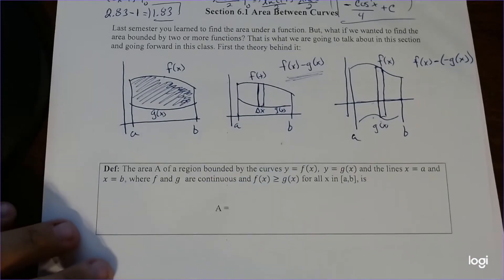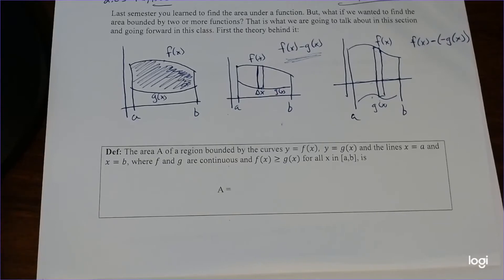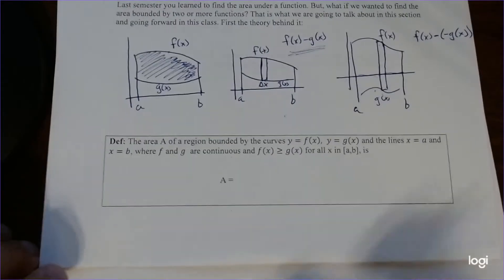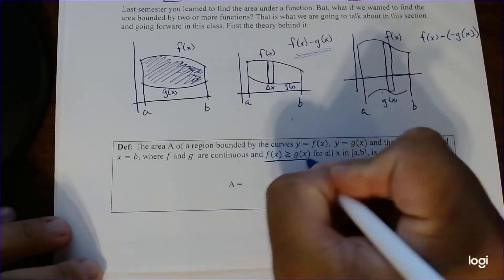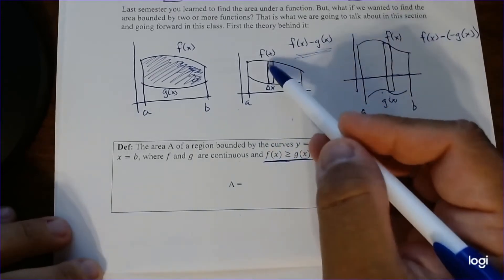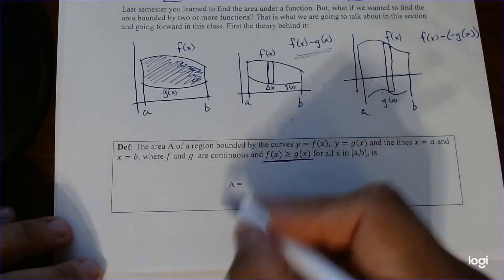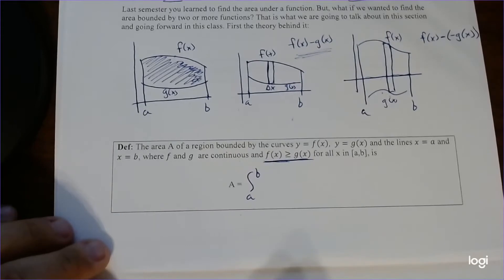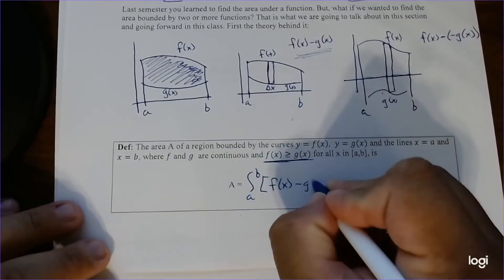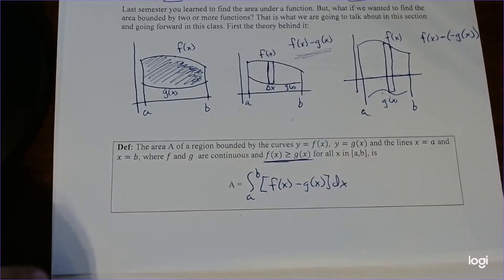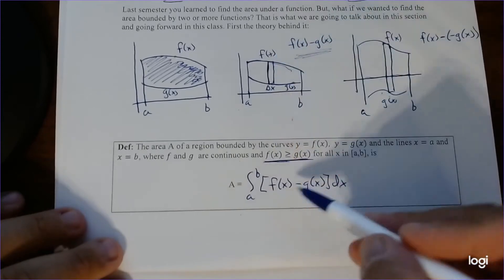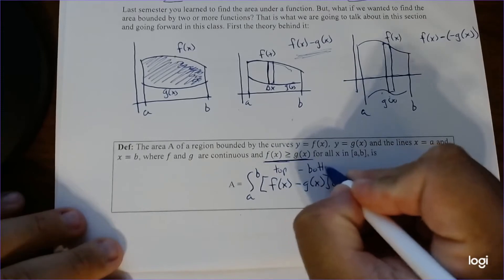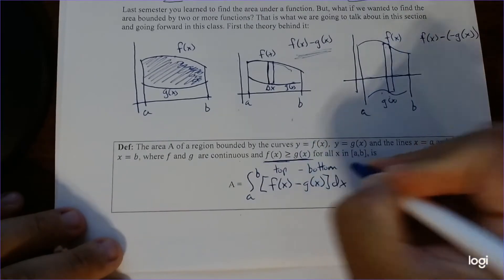So the area of a region bounded by the curves y=f(x) and y=g(x) and the lines x=a and x=b — where f and g are always continuous — and more importantly where one function is strictly greater than or equal to the other one, the area between these curves from a to b is the integral from a to b of the subtraction of the two functions. The easiest way to remember it: top minus bottom. f(x) is the top function, g(x) is the bottom function — top minus bottom.